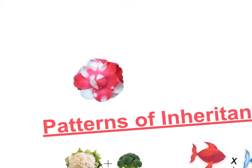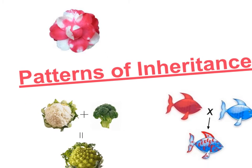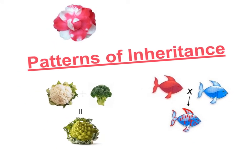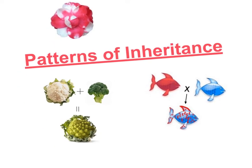Today we're going to talk about four different types of inheritance: complete dominance, incomplete dominance, co-dominance, and sex-linked traits. So let's get started.